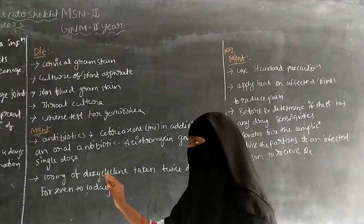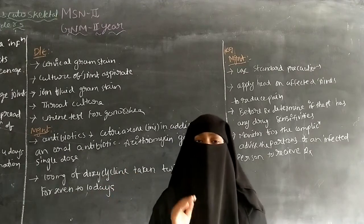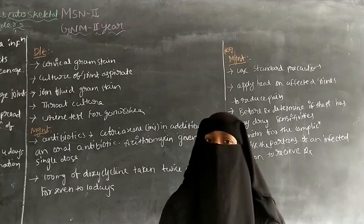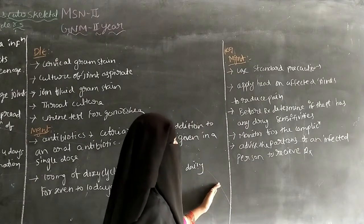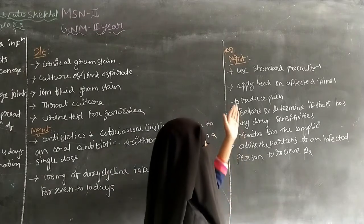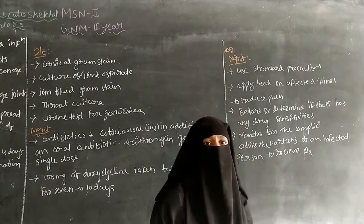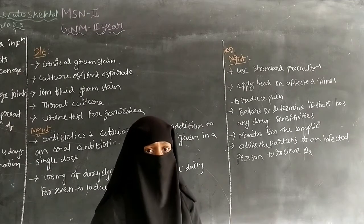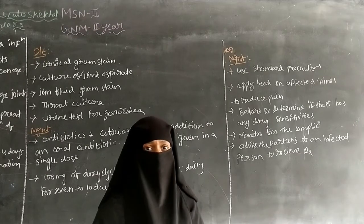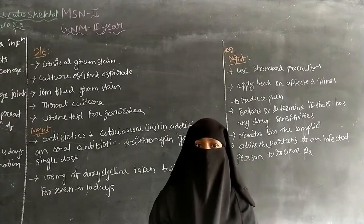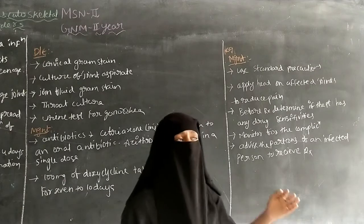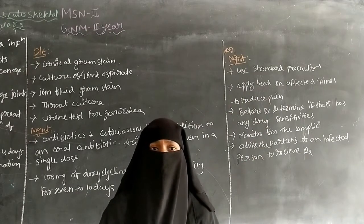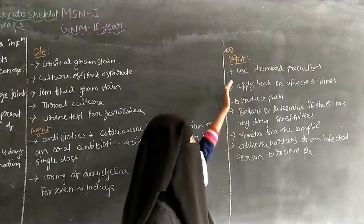Daily, 100 mg of doxycycline can be given twice a day for 7 to 10 days. That covers the management of gonococcal arthritis. Moving to nursing management: the first intervention is to use standard precautions. The nurse must maintain standard precautions during any procedure or care given to the patient to prevent infection.